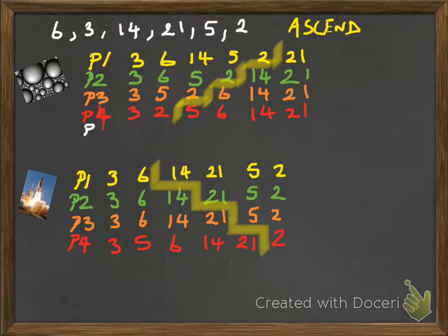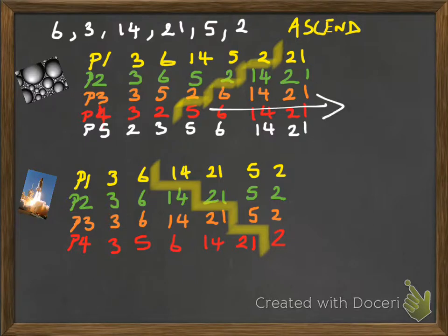Okay. Up to bubble. And we're going to tightly squeeze it in there. Pass 5. Considering 3 and 2. Yep, and we swap. And we end up with 2, 3, 5, 6, 14 and 21. Because I know that everything to this side of that line is already sorted.